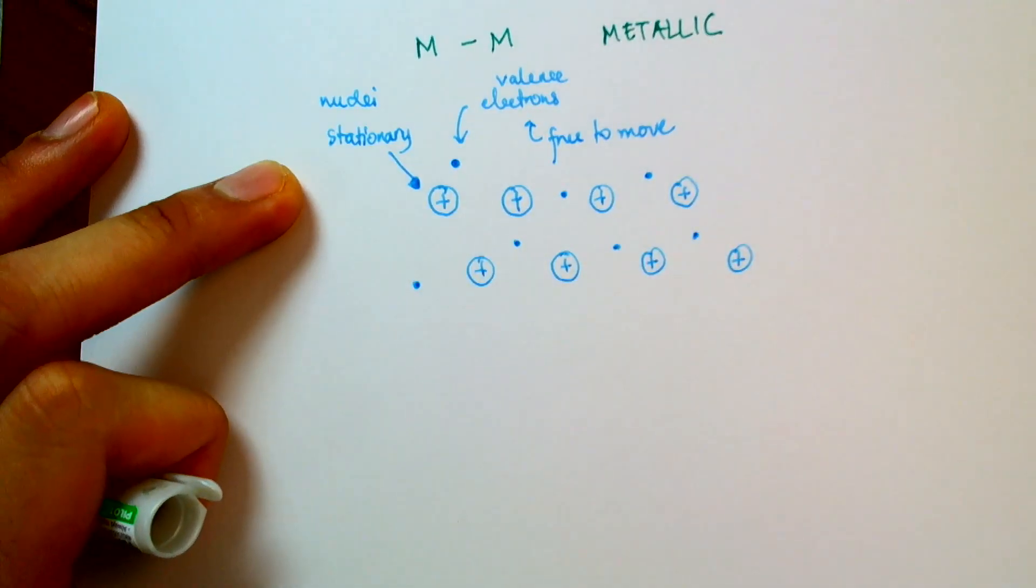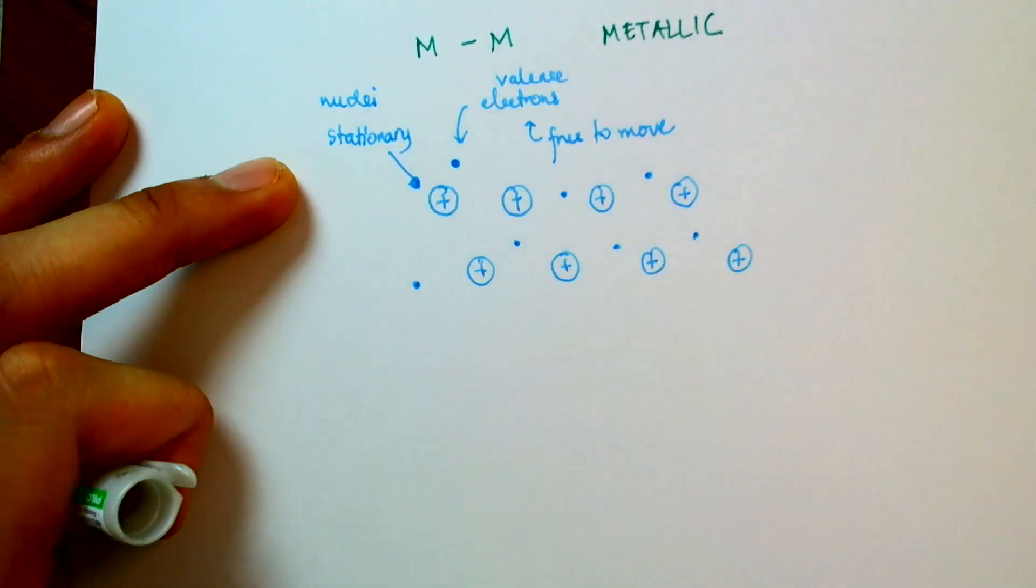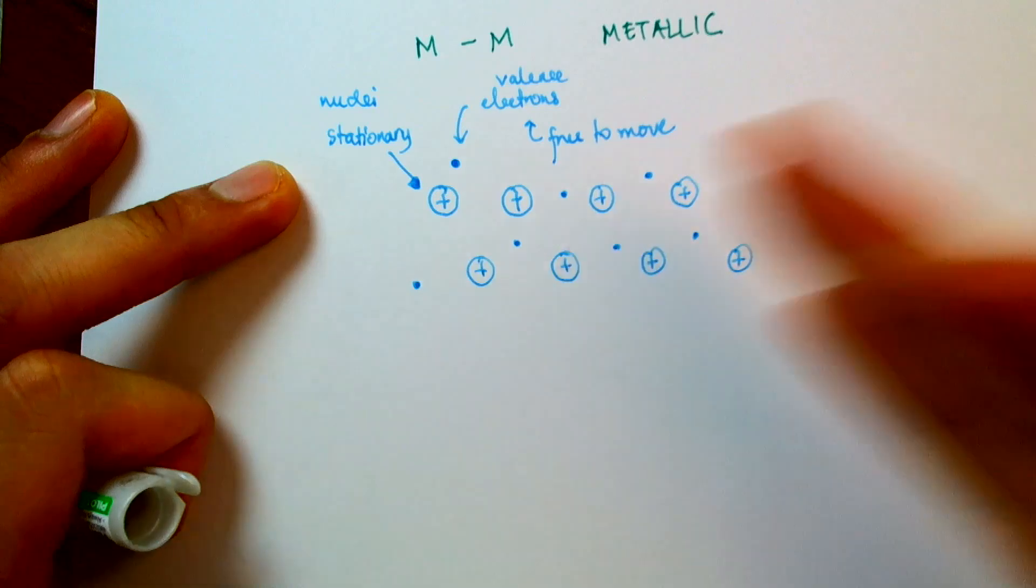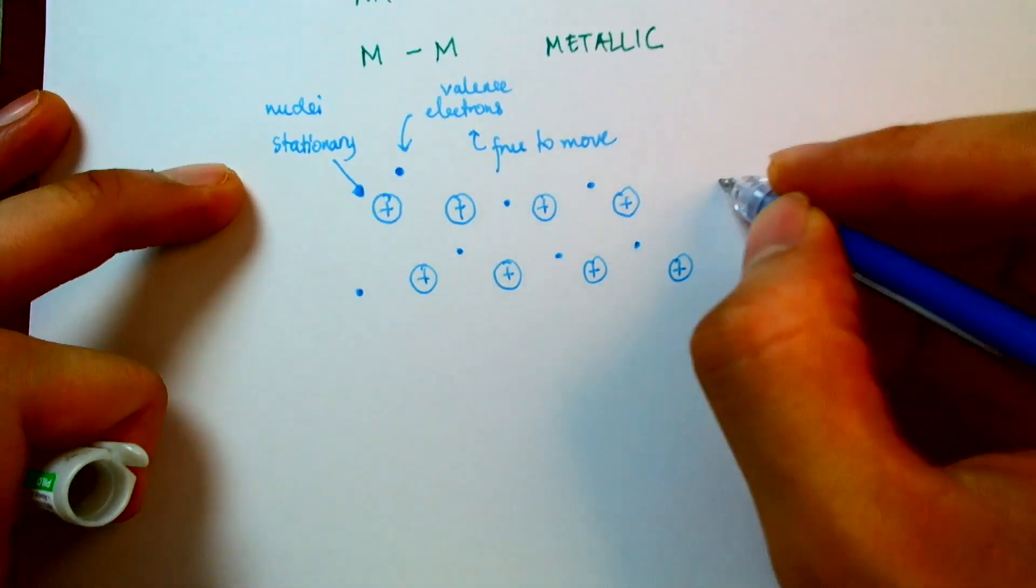So sometimes you hear the term that these electrons form a sea of electrons, because it's like an ocean. Just like how water is free to move in an ocean, these electrons are free to swim about in this metal lattice.